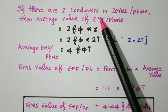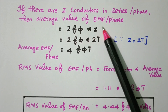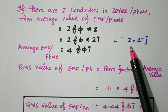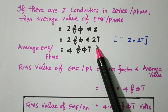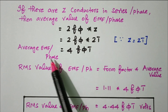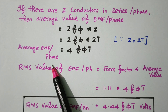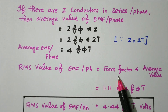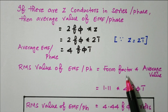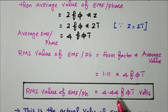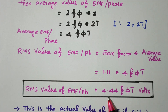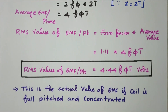If there are Z conductors in series per phase, the average EMF per phase = 2fΦ × Z. Since Z = 2T, substituting gives 4fΦT as the average EMF per phase. The RMS value of EMF per phase is form factor × average value. For a sinusoidal waveform, form factor = 1.11, so RMS EMF = 1.11 × 4fΦT = 4.44fΦT volts.